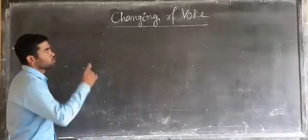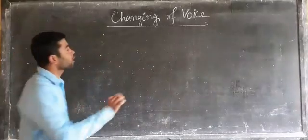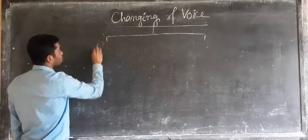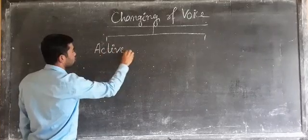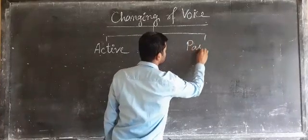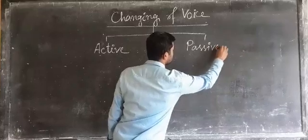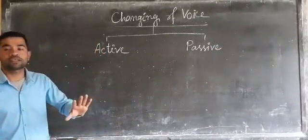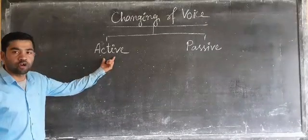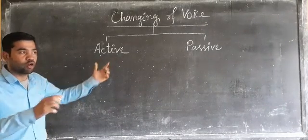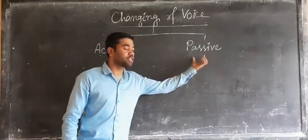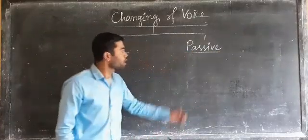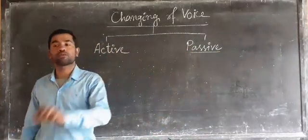In voice, you will get two types of voice: active and passive. Sometimes you will get sentences which are in active voice, and you have to change that voice to passive. And when you get any sentence in passive voice, you have to convert it to active. This is the process of changing the voice.